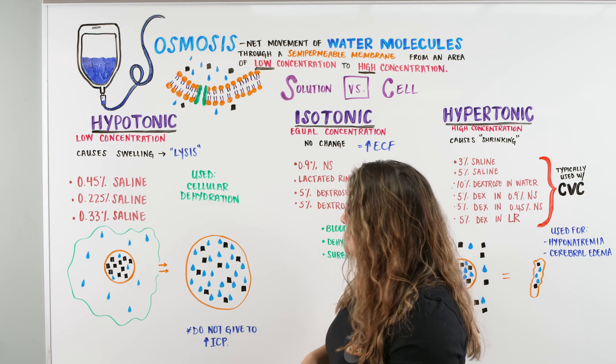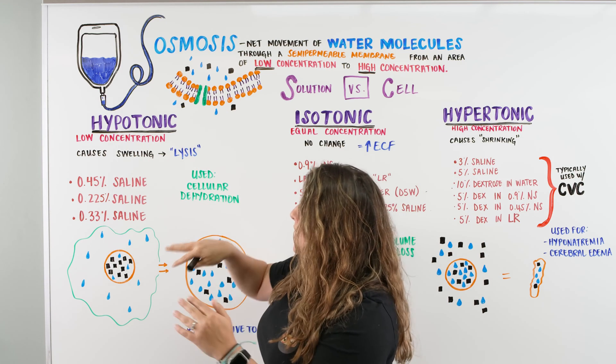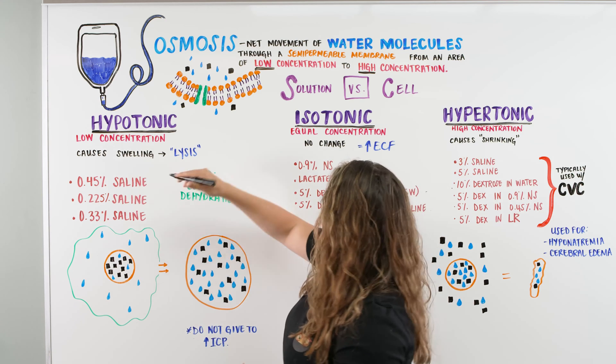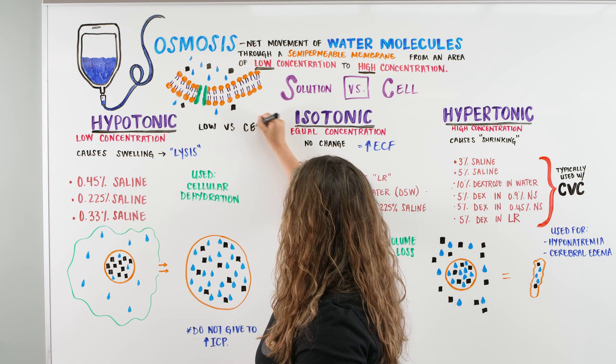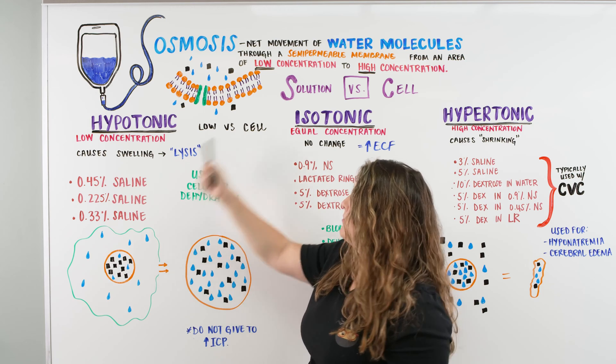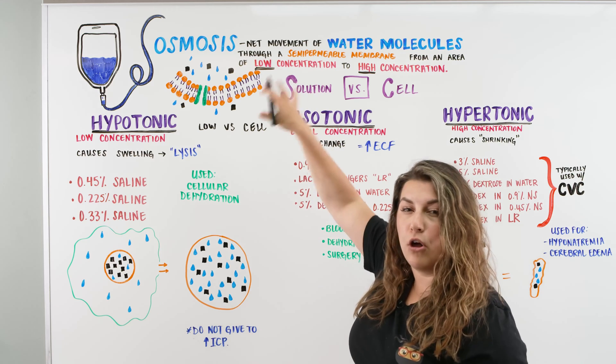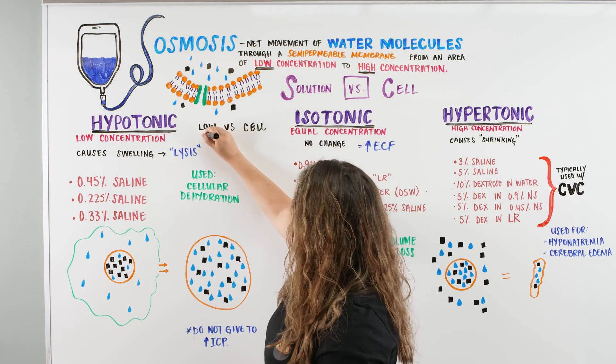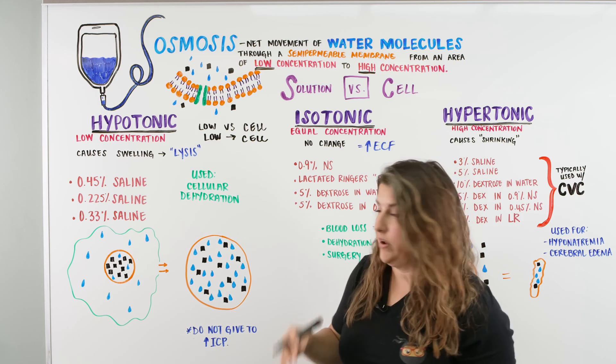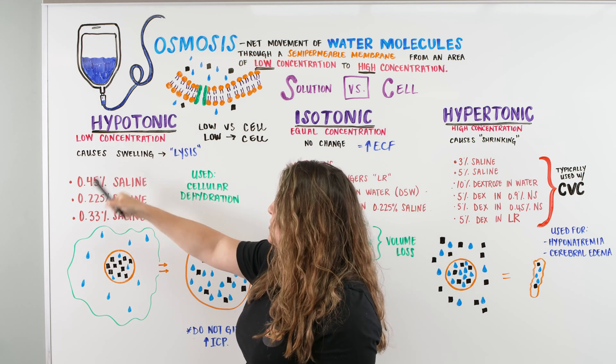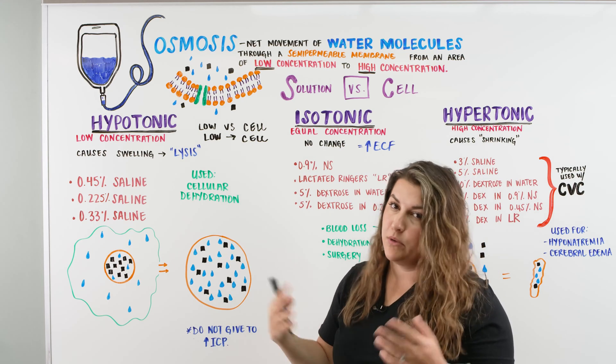Let's first talk about hypotonic. Hypotonic, the word hypo meaning low, tonic meaning tonicity of the solution. So we have a low concentration, right? So when we think about this cell, we're going to be thinking about our low versus cell. And when we look at low versus cell, solution versus the cell, our hypotonic is a low, low versus our cell. We said that the low concentration goes to the high concentration. So we have a low that's going to go to the cell. In this right here, we already know what's going on. We know hypotonic is a low concentration and it's going to cause our cell to swell. And when it swells too far and bursts, we can have lysis and we don't want that to happen.